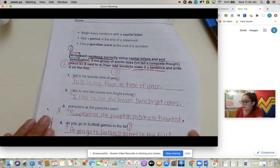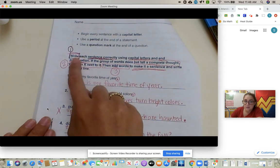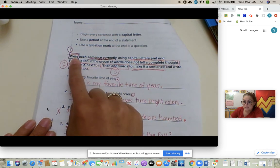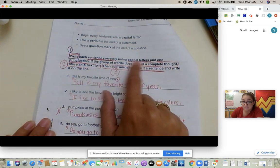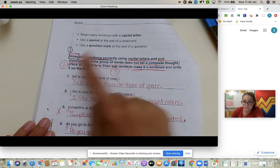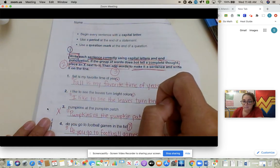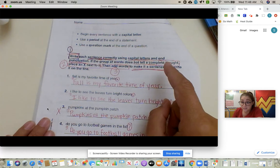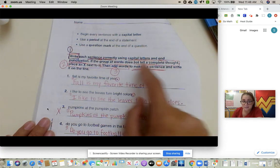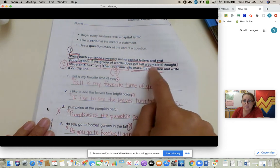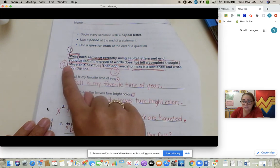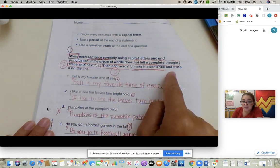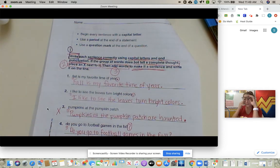I'll explain the directions. So there's a lot. Number one, we box 'write.' That's the first command we are told to do. We write each sentence correctly using capital letters and end punctuation. But we need to figure out if it's a sentence to begin with. Is it a complete thought or is it a fragment? So if the group of words does not tell a complete thought, place an X next to it. Then add words to make it a sentence and write it on the line. That's what we did.